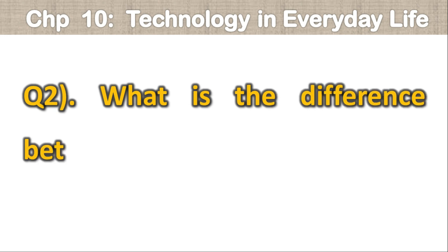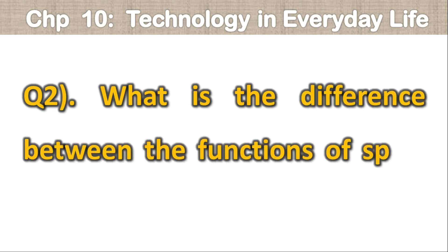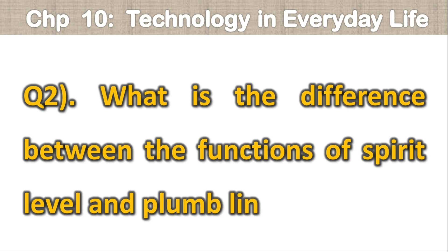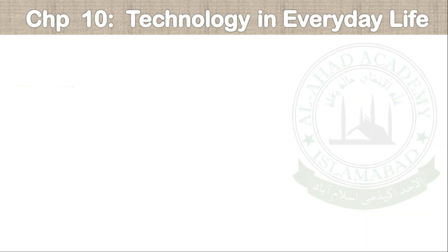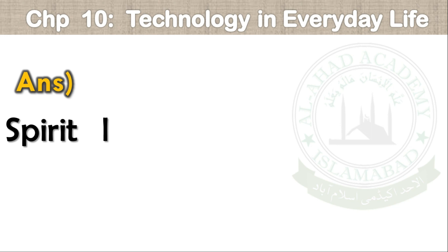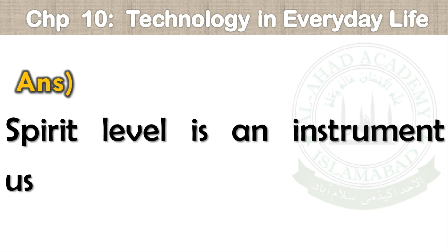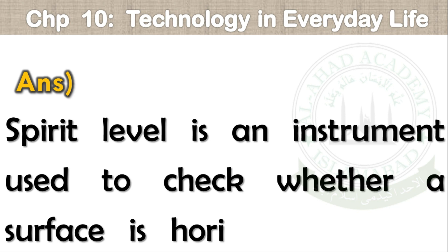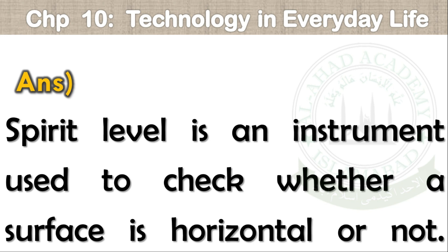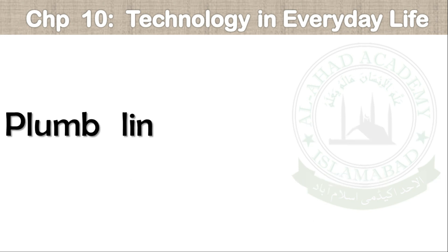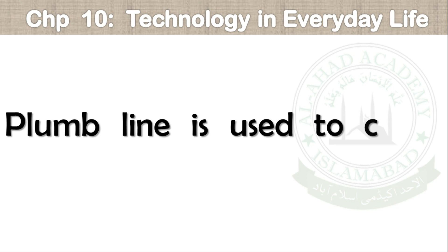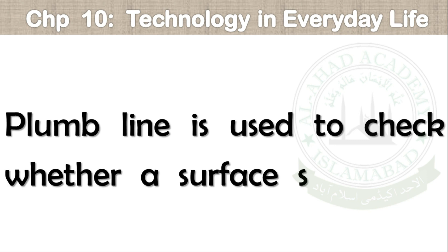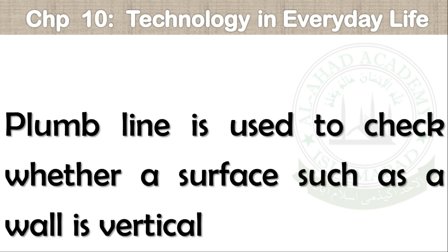Q2. What is the difference between the functions of spirit level and plumb line? Spirit level is an instrument used to check whether a surface is horizontal or not. Plumb line is used to check whether a surface such as a wall is vertical or not.